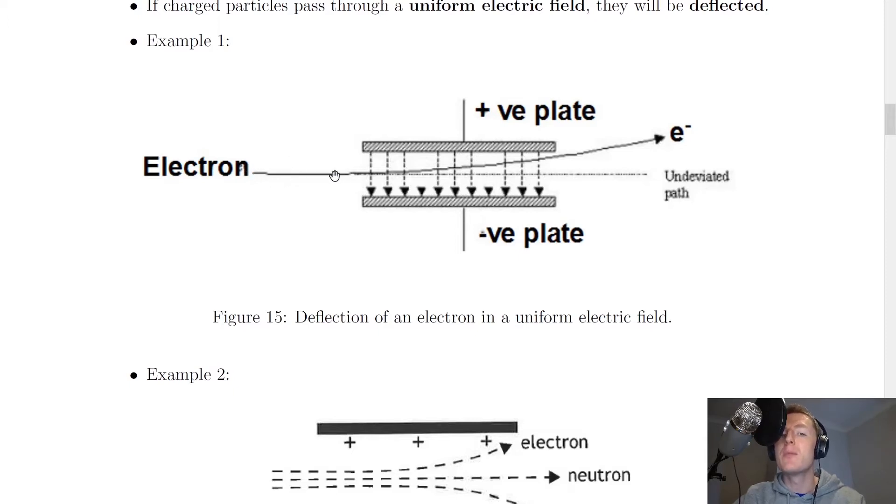Then the electron will actually move in and curve upward towards the positive plate. And that's because the negative charge of the electron is going to be attracted towards the positive charge and also repelled away from the negatively charged plate on the bottom.